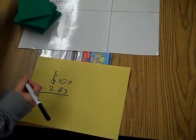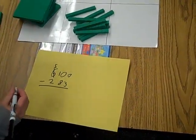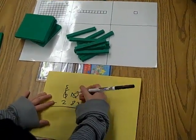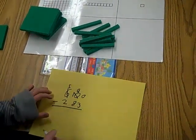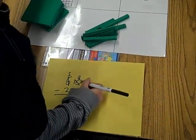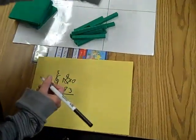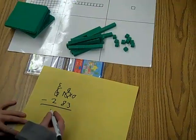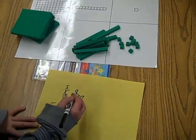Then you cross out the 10 and make it a 9 and trade it for 10 ones. Then you subtract the ones.